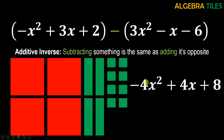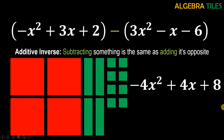Looking at the remaining tiles you can write the answer: negative 4x squared plus 4x plus 8. We get negative 4x squared because we are left with red x squared tiles — red represents negative. Green tiles represent positive terms. If any positive and negative tile of the same size remain together they form a zero pair and cancel out. This is all about addition and subtraction using algebra tiles. In the next video we will discuss multiplication. Thank you so much.